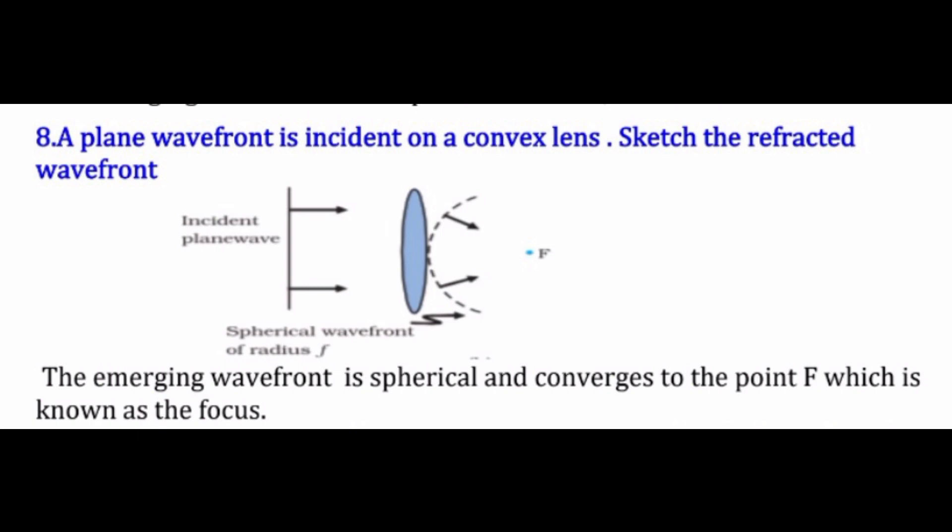The thickest portion of the lens delays the light waves, so the wavefront has a depression at the center. As a result, the emerging wavefront is spherical and converges to the point F, which is known as the focus. So we are getting a spherical converging wavefront.